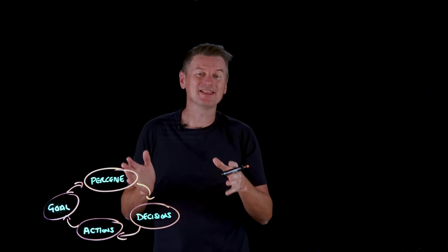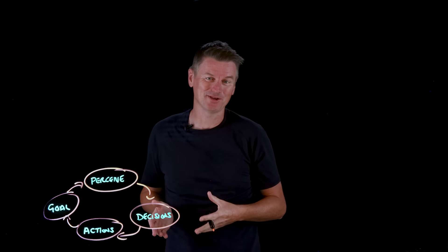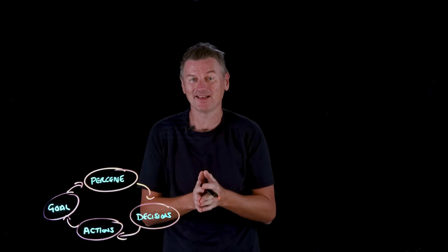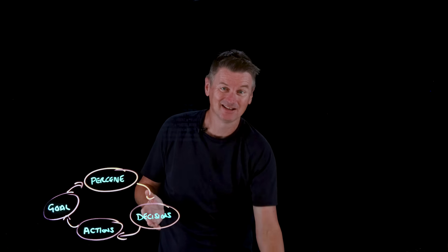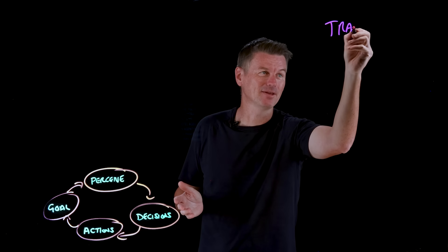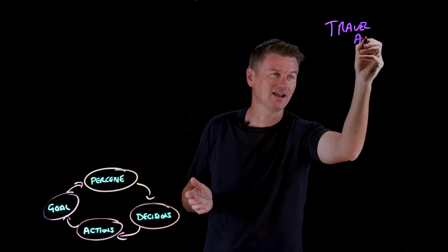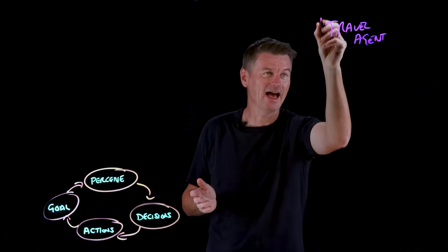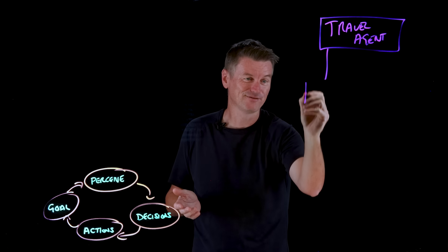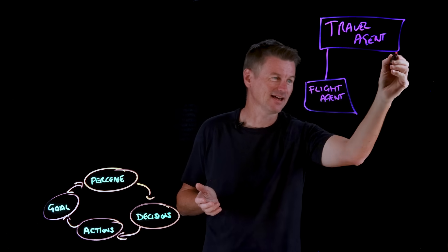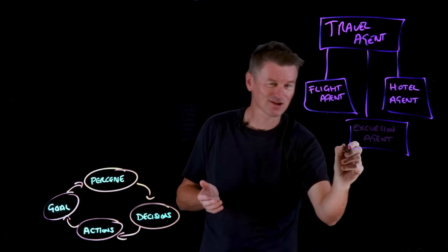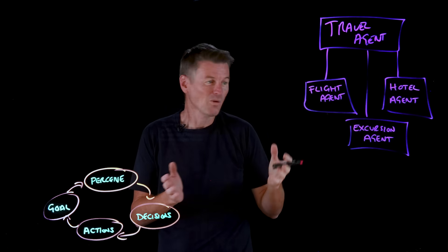But how do different agents talk to each other to solve complex problems that a given agent can't solve by itself? Take travel planning — you might need to integrate a bunch of agents together, like a travel agent that needs to integrate with a flight agent, a hotel agent, an excursion agent, and so forth.